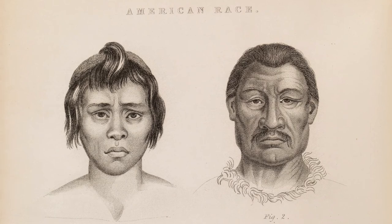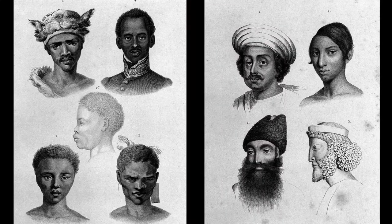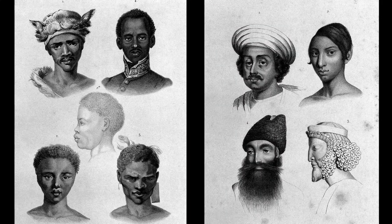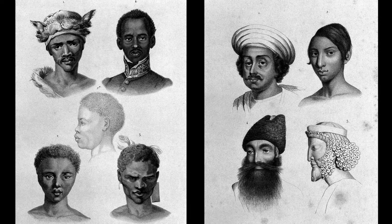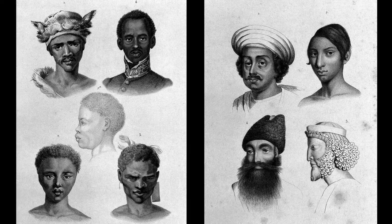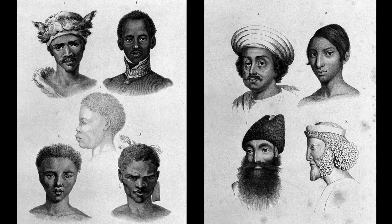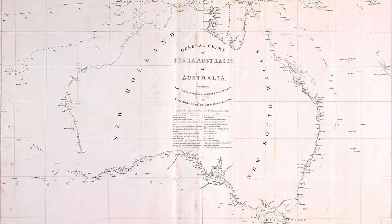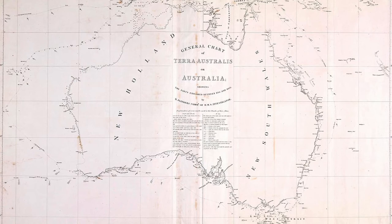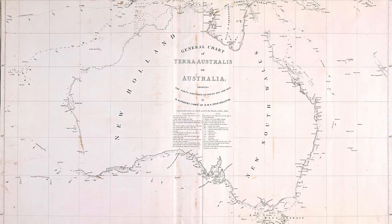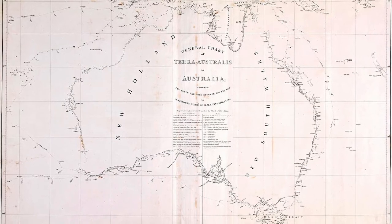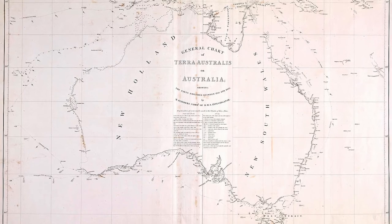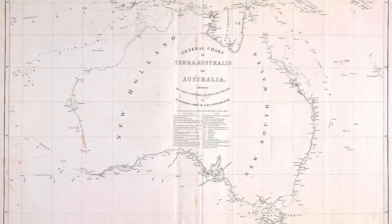There are a lot of questions that people are struggling with in this period. One is how to explain the variety of human beings that are now known to exist in the world. It might be worth remembering that by this period all the main continents have been discovered, given that Australia is now part of people's imaginary in the second half of the 18th century. So people are struggling to explain human difference.